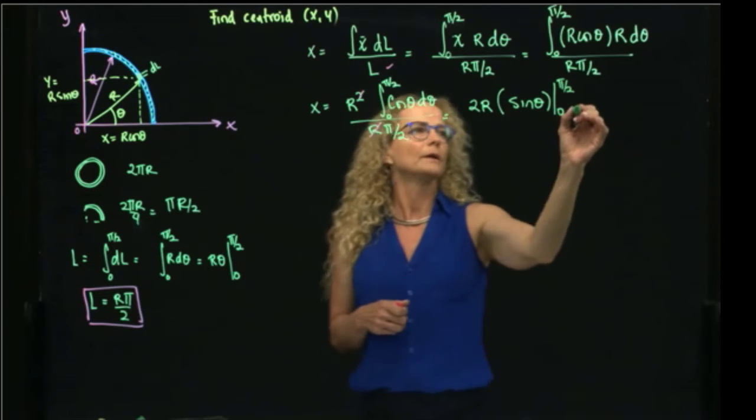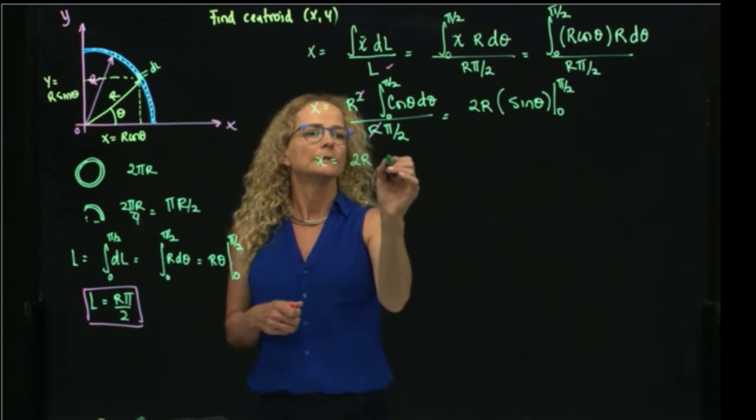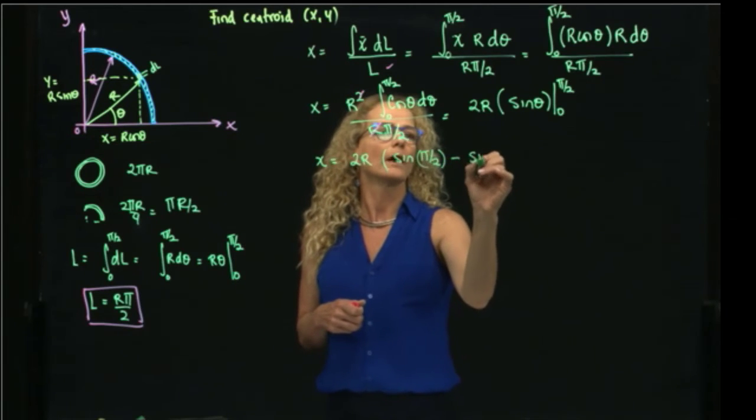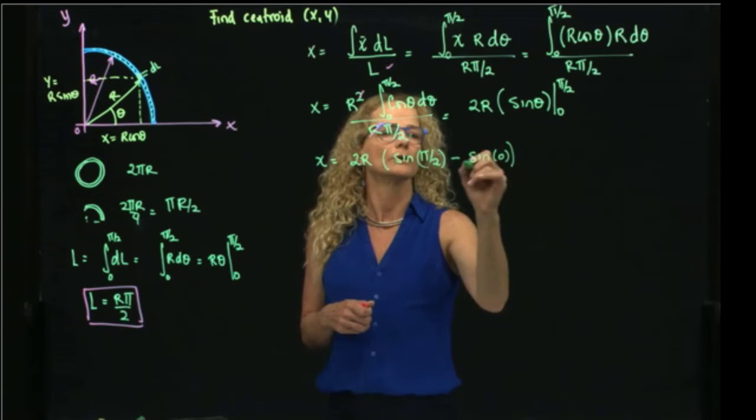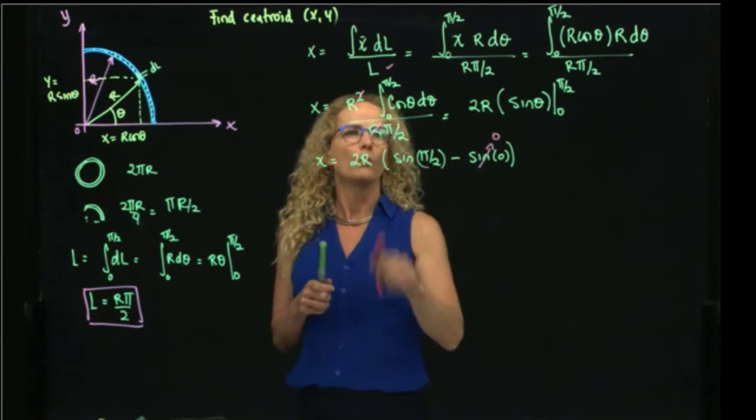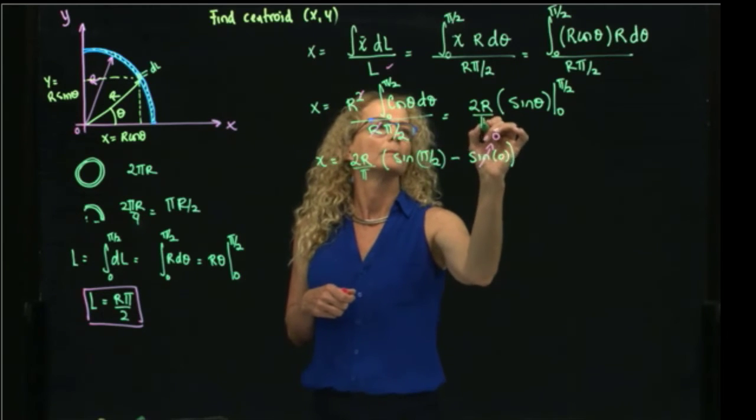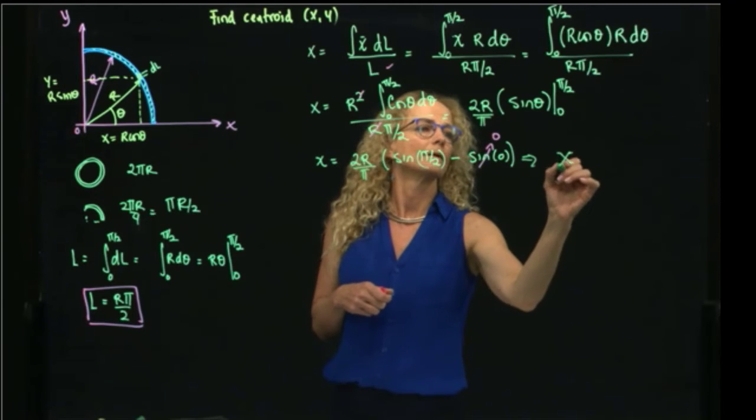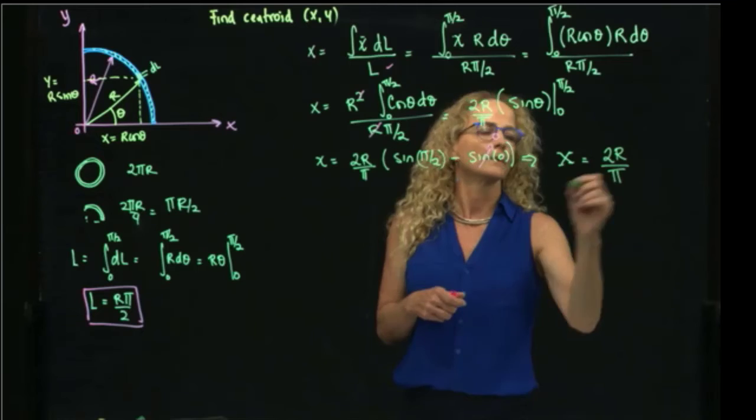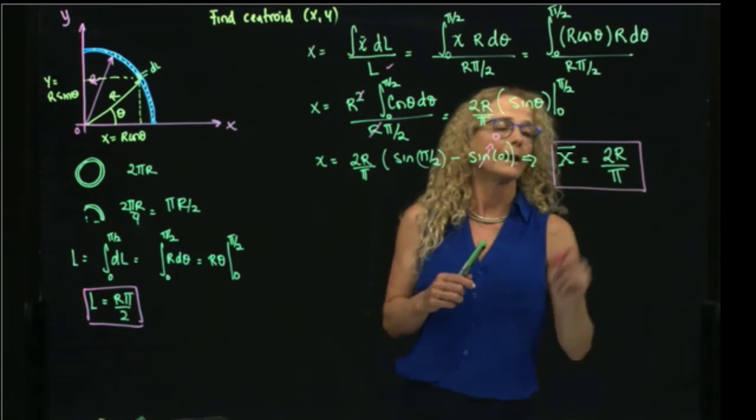So that gives me that x will be equal to 2r over π times sine of π/2, which is 1, right? Minus sine of 0, which is 0. So this goes away, and this equals 1, right? Therefore, x is equal to 2r over π. And that's the result we were looking for, for x.